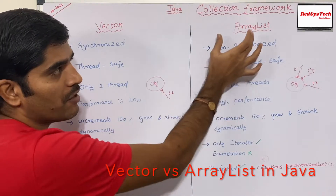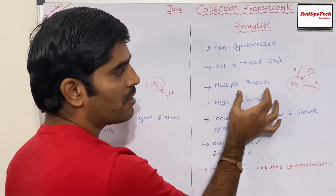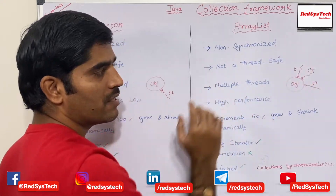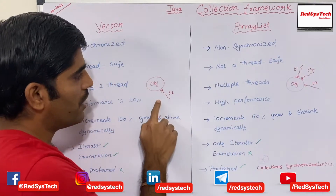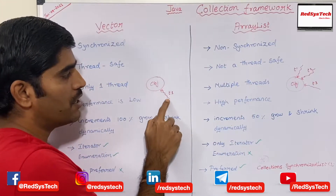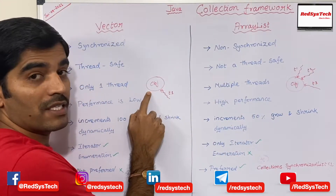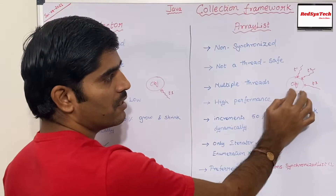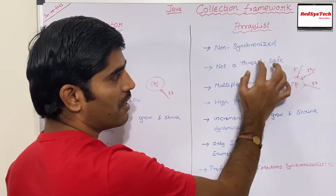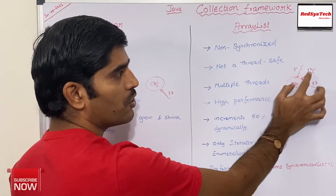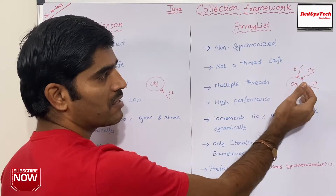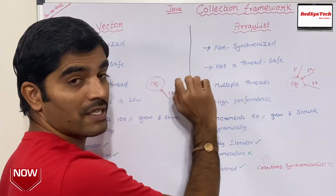But in terms of ArrayList, multiple threads can able to access an object at the same time. If you guys see here, only T1 can able to access the object in Vector. But in terms of ArrayList, T1, T2, T3 — even n number of multiple threads can able to access the object.